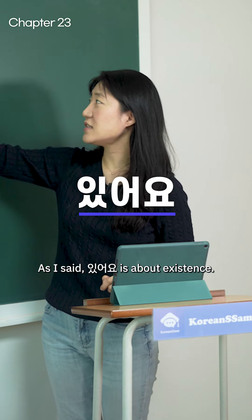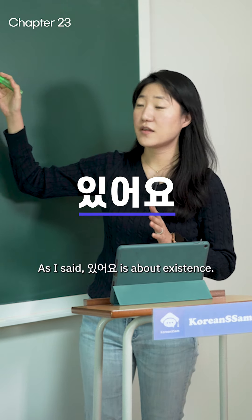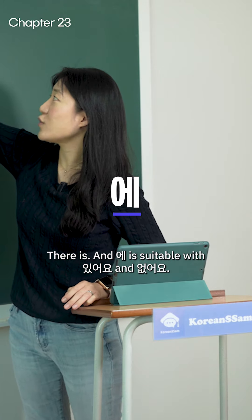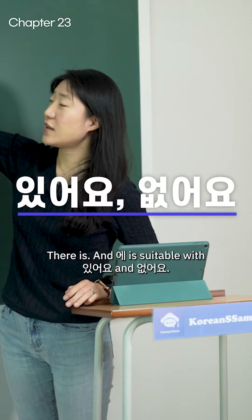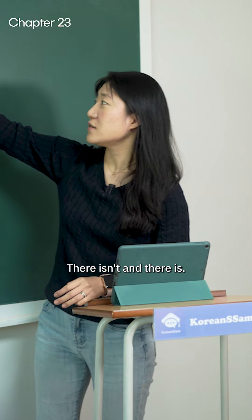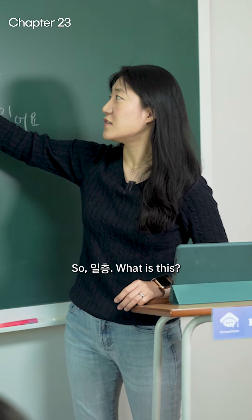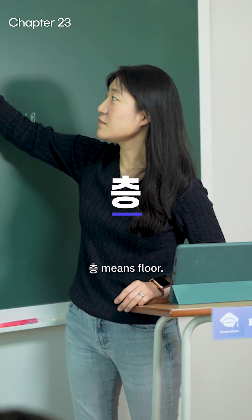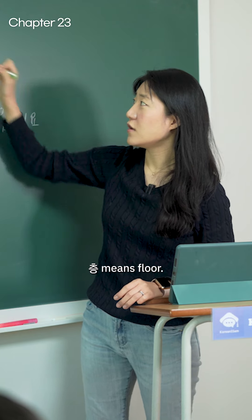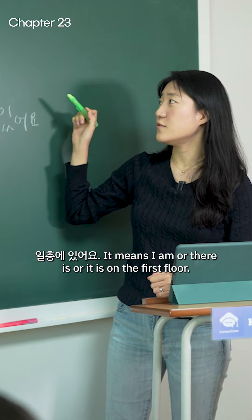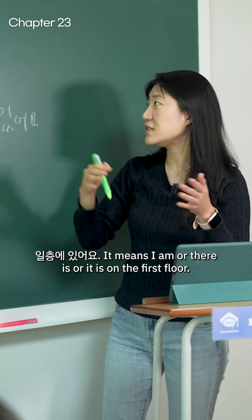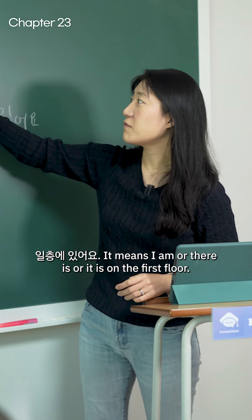As I said, 있어요 is about existence, right? There is. And 에 is suitable with 있어요 and 없어요 — there isn't and there is. So 1층, what is this? 층 means floor. So 1층에 있어요 means I am, or there is, or it is on the first floor.